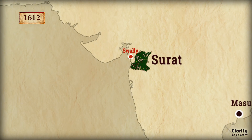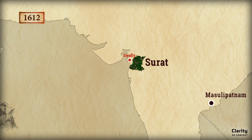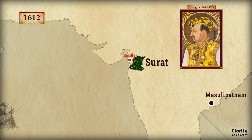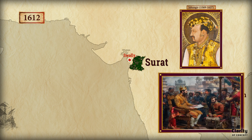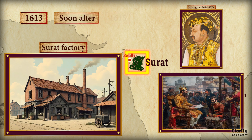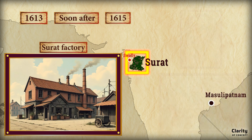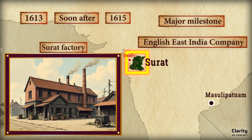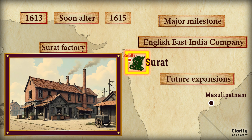This victory at Swally had significant consequences. It impressed the Mughal Emperor Jahangir, who saw the English as a rising power capable of challenging the Portuguese. As a result, Jahangir granted the English permission to establish a factory at Surat in 1613. The factory was formally established in 1615, marking a major milestone for the English East India Company and opening the door to future expansions.